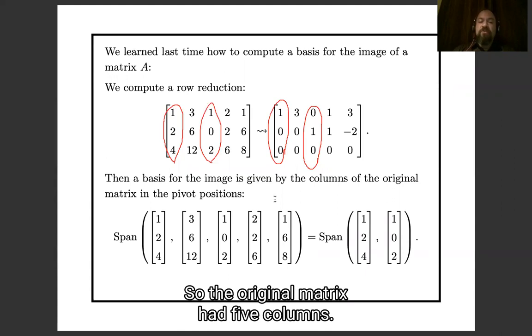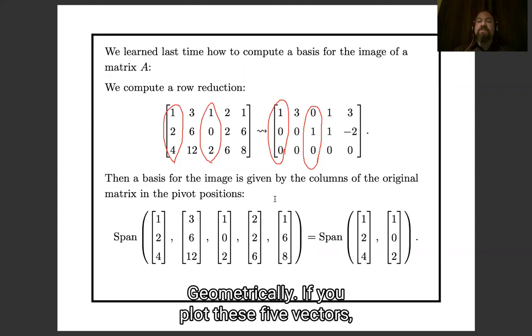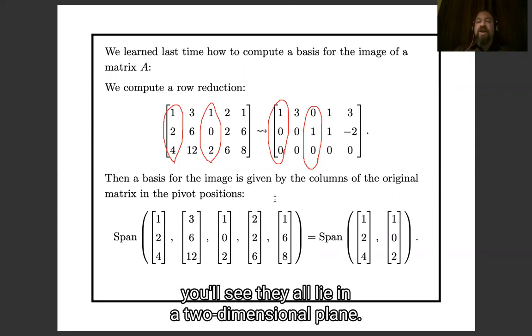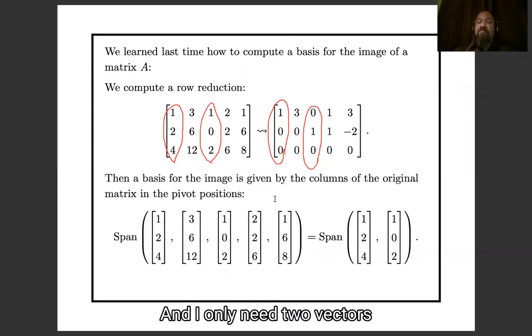And then a basis for the image is given by just those columns of the original matrix. So the original matrix had five columns but in order to span its image I only needed two of them. Geometrically if you plot these five vectors you'll see they all lie in a two-dimensional plane. So the image is that two-dimensional plane and I only need two vectors to span a two-dimensional plane.